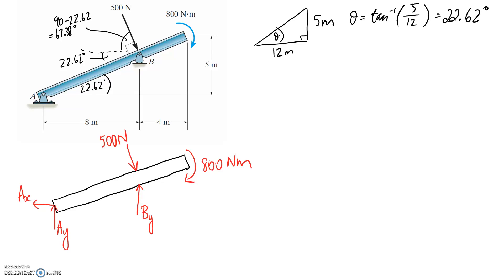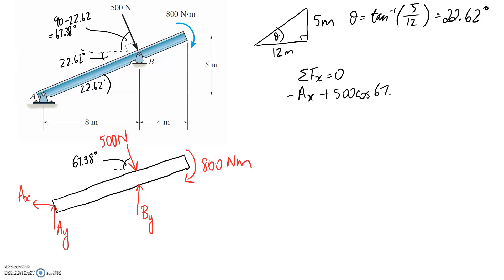We can start using our equilibrium equations. I'll start with the sum of forces in the x direction. In the x direction we're going to have Ax which is pointing backwards so it's negative. These vertical forces don't count, and we need to figure out the x component of the 500N force. We want the cosine component with respect to that angle, so it's going to be 500 cos 67.38, positive because the x component is pushing to the right. Rearranging, Ax equals 192.3 newtons.